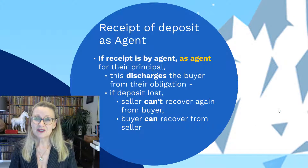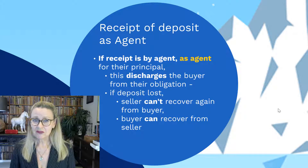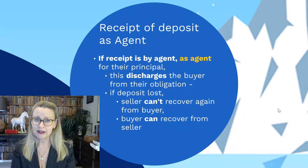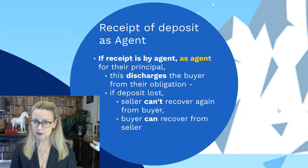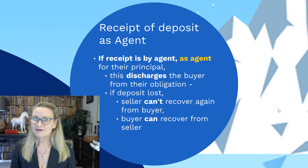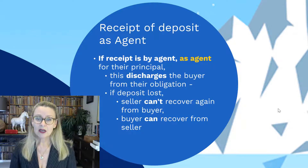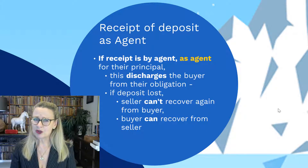Where the real estate agent receives a deposit as agent for the principal, they are effectively acting as their principal — holding out their hand and taking that money. Once they grab hold of that money, it's as though their principal, the seller, has also grabbed hold of it. That means the money is effectively in the hands of the seller. Once the agent, acting as agent, has received that deposit, it discharges the buyer's obligation to pay the deposit and it's as if the seller has already received it. If things go wrong — say the real estate agent goes insolvent — the seller cannot recover again from the buyer, and the buyer can recover from the seller, as it's as though the seller has already received the money.